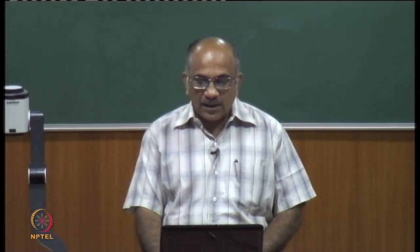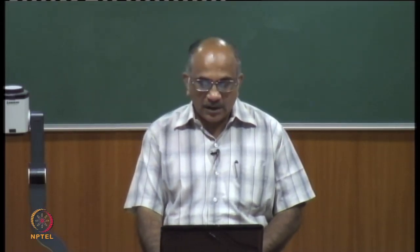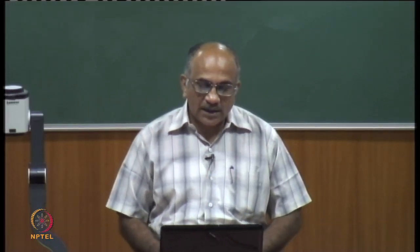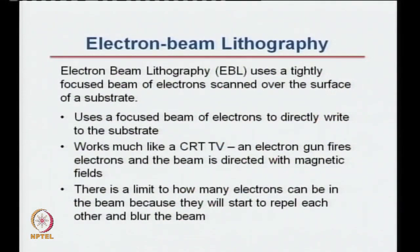Today, the second and final part of lithography, we will first discuss electron beam lithography. From the term electron beam lithography, you can make out that you are going to use an electron beam to make patterns on surfaces. The electron beam lithography will use a very focused beam of electrons, which can be scanned over the surface of a substrate, and we can directly write on a substrate using this fine beam of electrons.